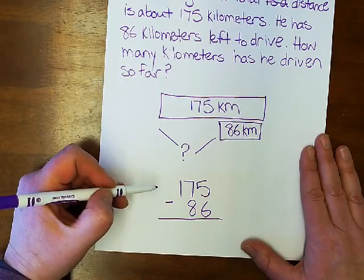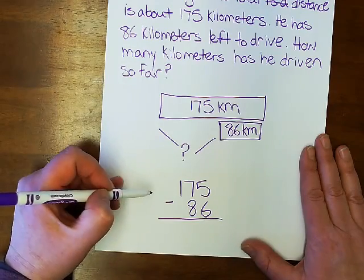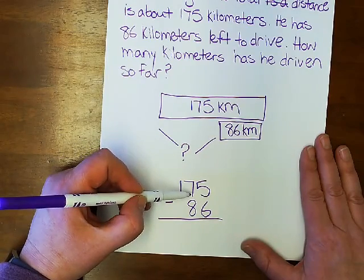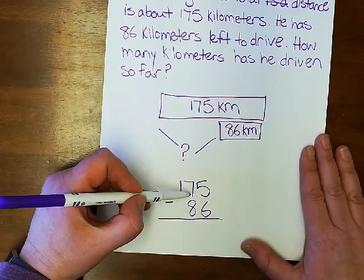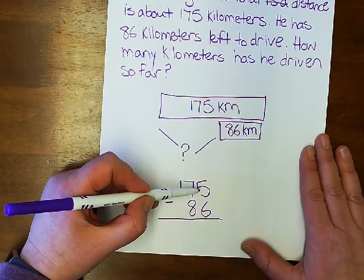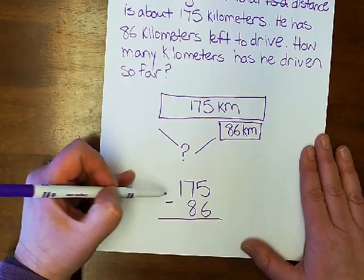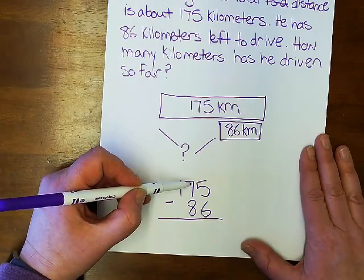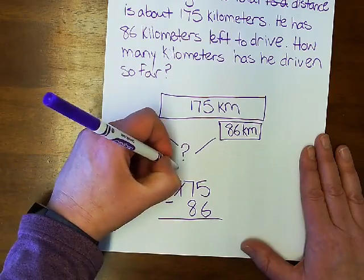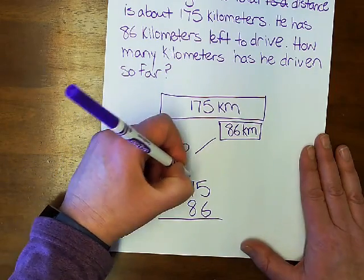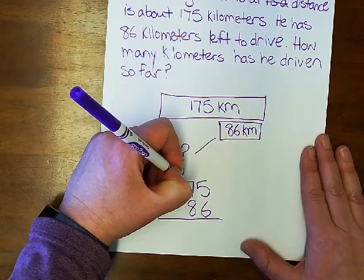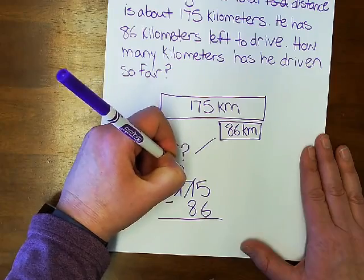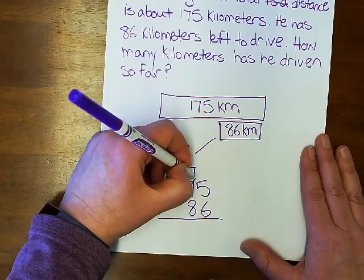So before I subtract, I need to see if any unbundling needs to be done. I can see that there are not enough tens or ones. So I can unbundle 100 to make 10 tens. I'm going to unbundle this to make 10 tens. So after unbundling, I'm going to have 0 hundreds and 17 tens.